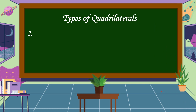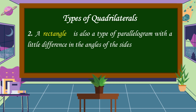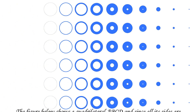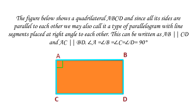The second type of quadrilateral is a rectangle. A rectangle is also a type of parallelogram with a lot of difference in the angles of the sides. In a rectangle, all the sides are at a right angle, or perpendicular to each other. The figure below shows a quadrilateral ABCD, and since all its sides are parallel to each other, we may also call it a type of parallelogram with line segments placed at right angles to each other. This can be written as AB is parallel to CD, and AC is parallel to BD. Angle A equals angle B, equals angle C, equals angle D. All their angles are 90 degrees with a total of 360 degrees.